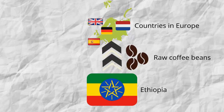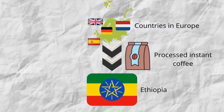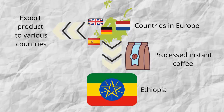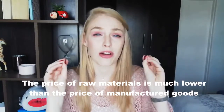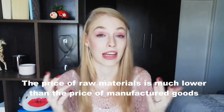Let's look at two different case studies to really understand this trading relationship. Ethiopia sells raw coffee to Europe. In this scenario, the raw coffee is the raw material being sold to Europe at a fairly low price. The MEDC would then process this coffee into instant coffee and sell it back to Ethiopia at a higher price. The key takeaway is that the prices of raw materials are much lower than the prices of manufactured goods.